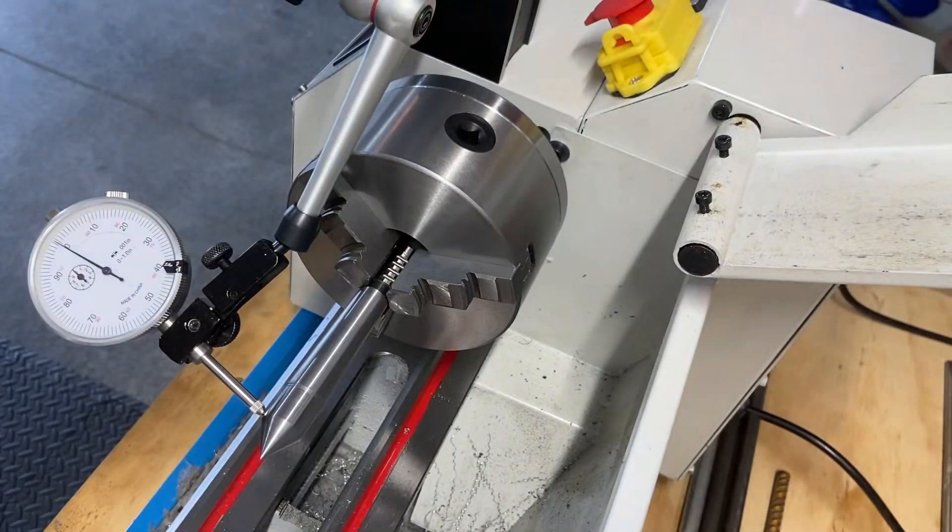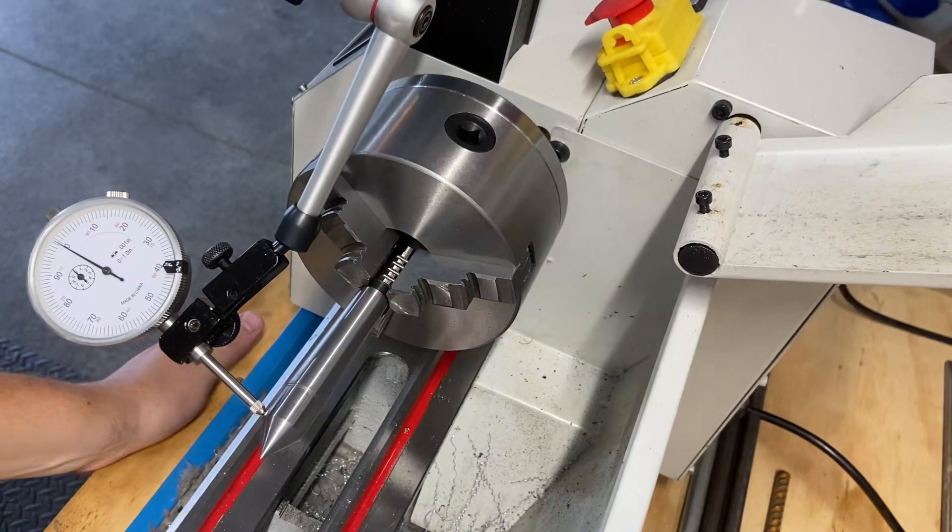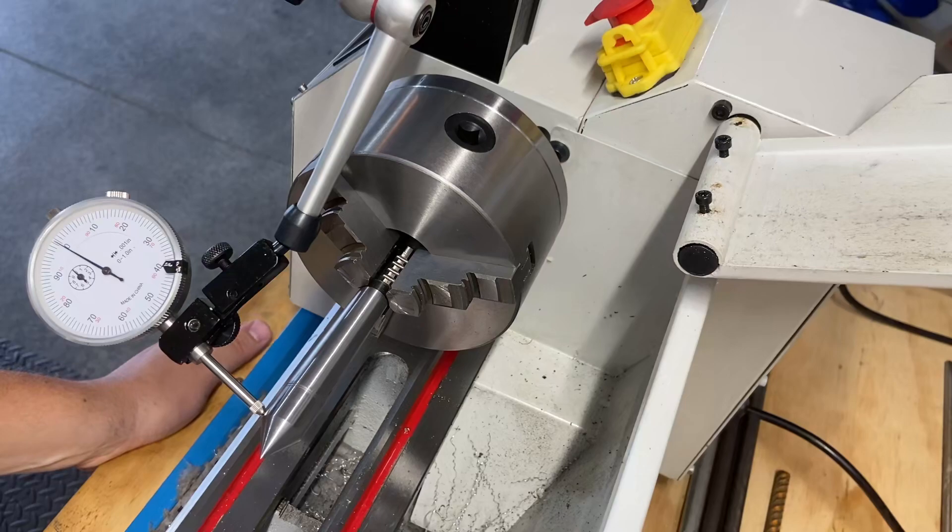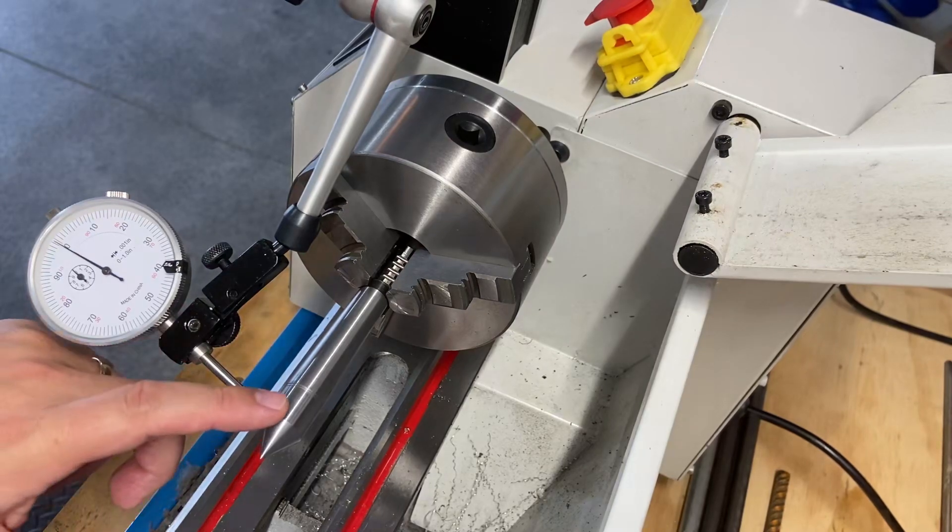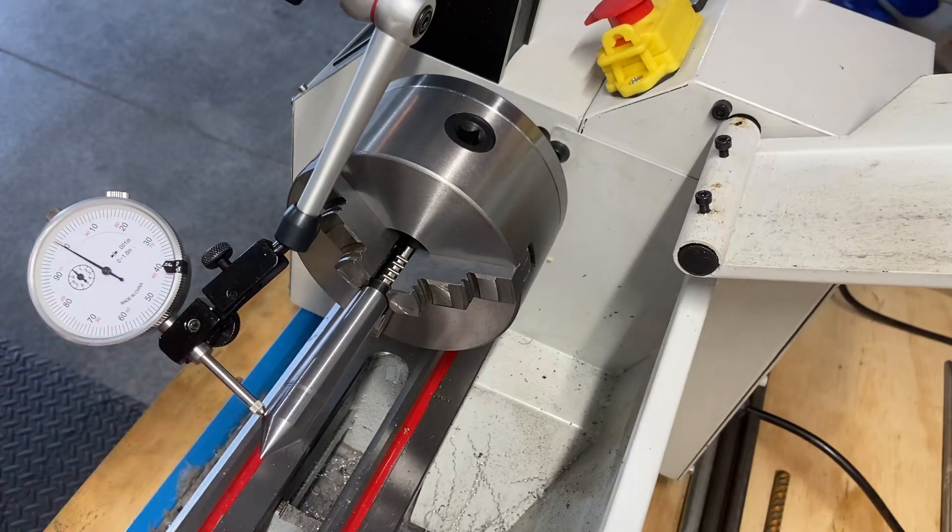So he had a great suggestion. He said put your dead center in, get it to run concentrically, and then you bring your tailstock up and center it that way.